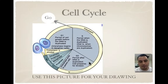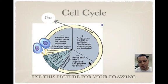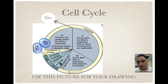A lot of the organelles are going to duplicate. You're going to have to double the amount of mitochondria, Golgi, and all those structures so that the new cell can have all those materials too. After interphase and the cell is ready to go, you begin mitosis.